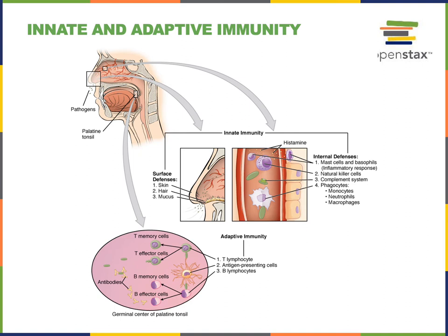Natural killer cells are a special type of lymphocyte that is part of innate immunity and can release cytotoxic granules that will kill cells infected with a virus — they kill our own cells when those cells become infected. The complement system refers to defense proteins that can punch holes in the cell walls of bacteria to kill those cells. Phagocytic cells include monocytes, neutrophils, and macrophages.